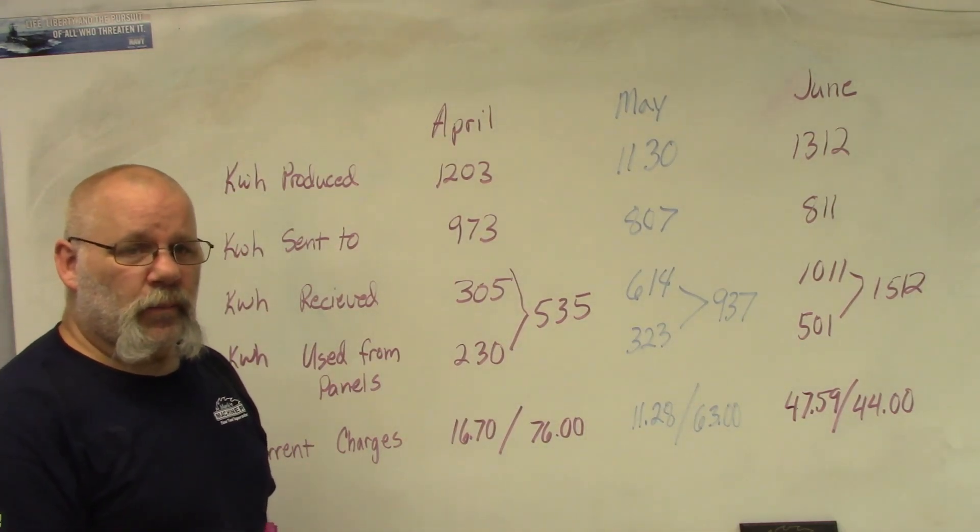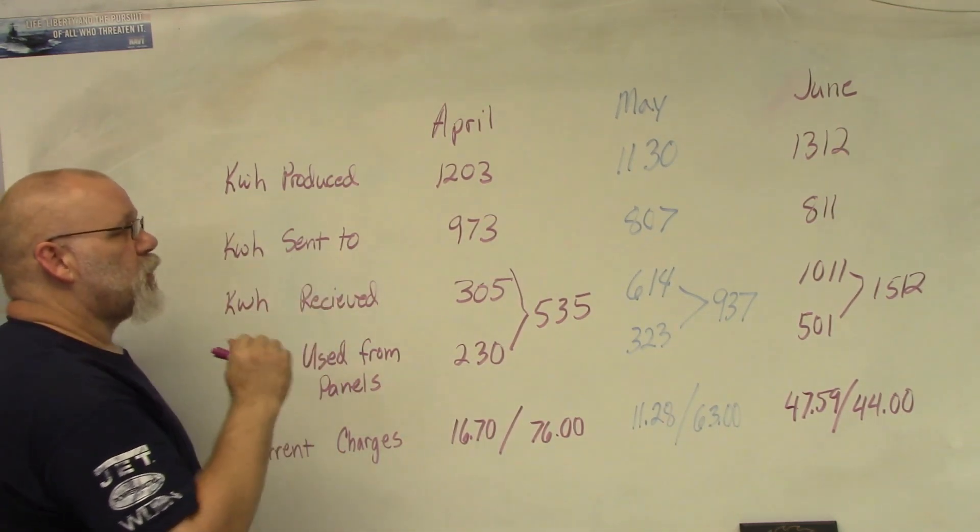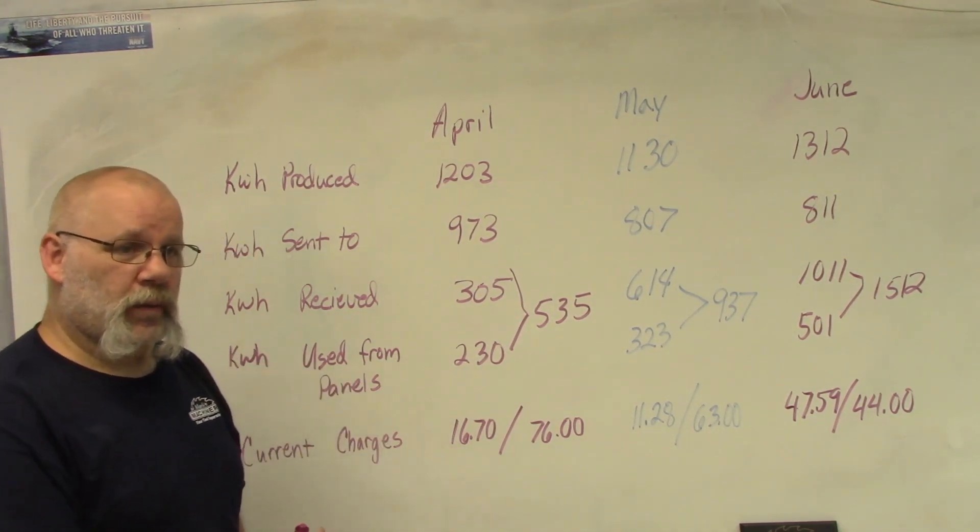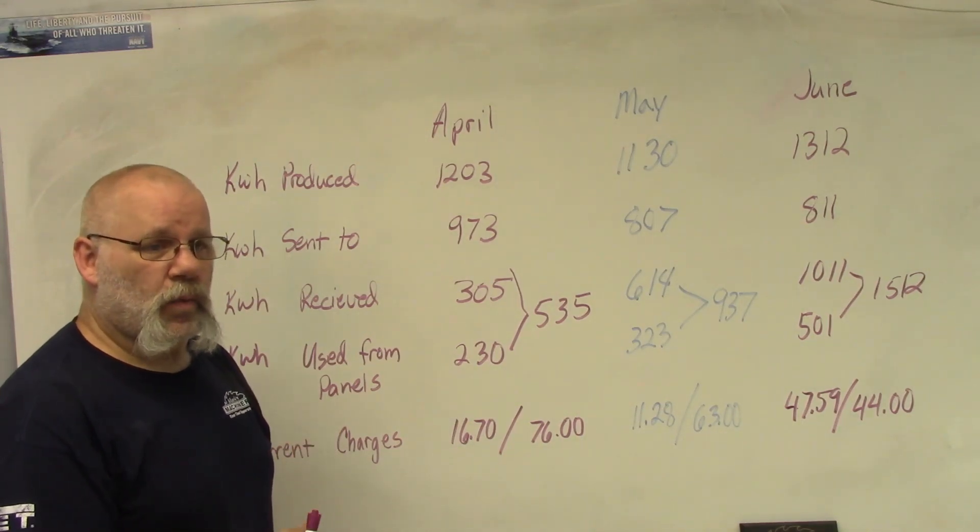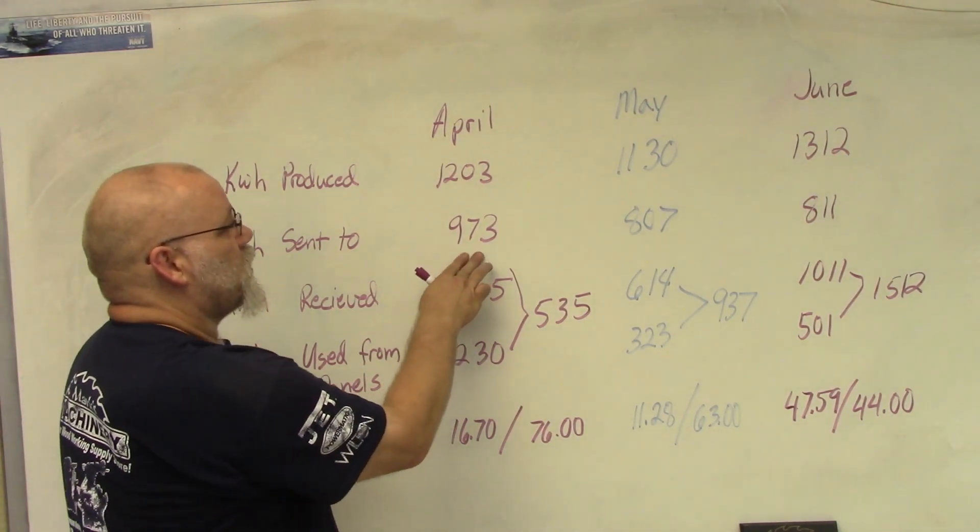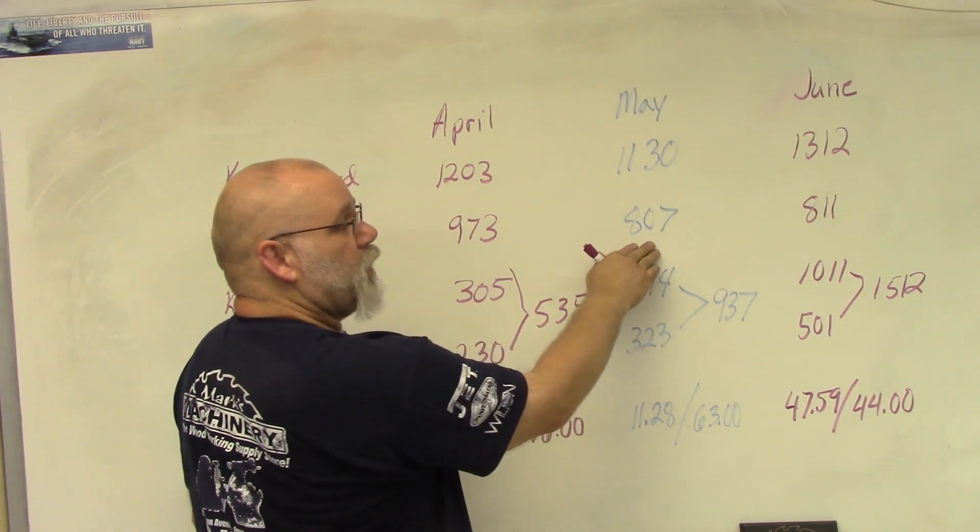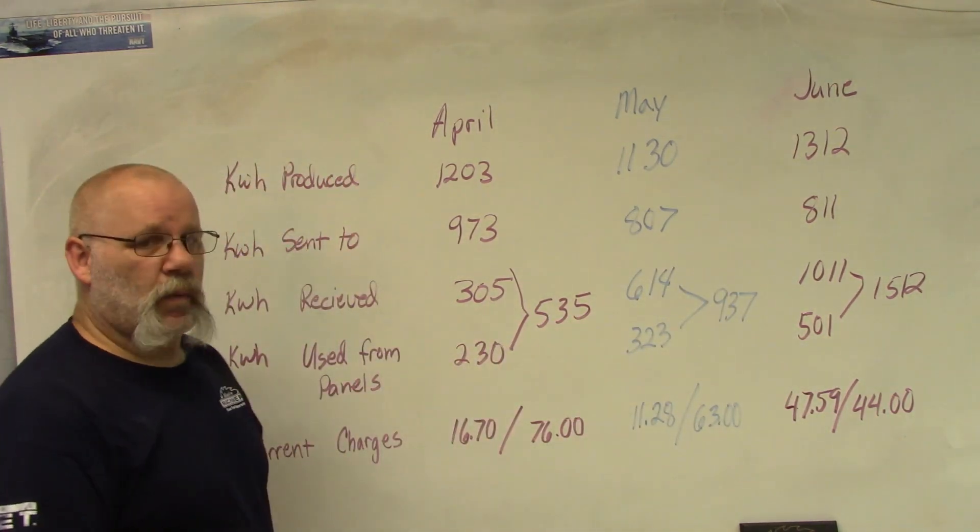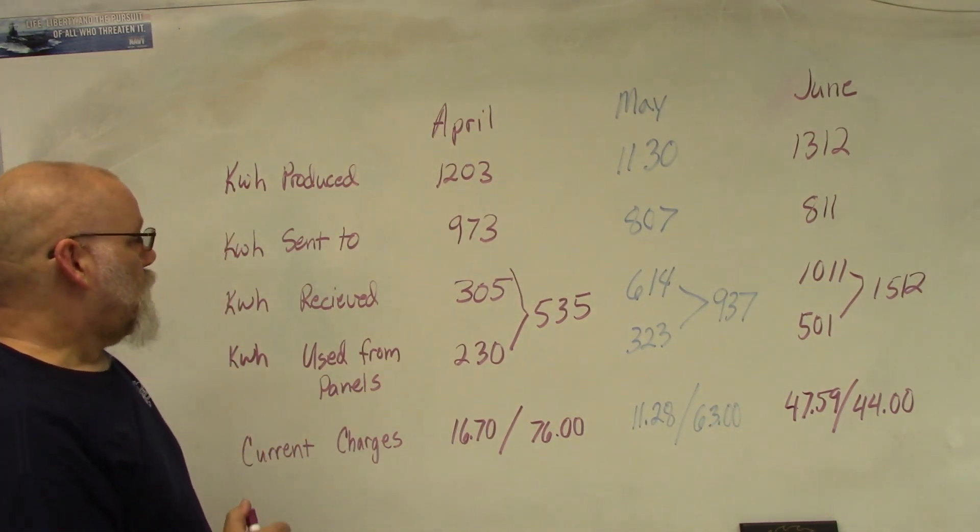Kilowatt hours sent to grid - this number is how much we sent to the power company. Our solar panels are hooked up to the grid, so when we're not using the electricity it goes to the grid. In April we sent 973 kilowatt hours, in May we sent 807 kilowatt hours, and in June we sent 811 kilowatt hours to the power company.